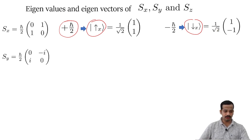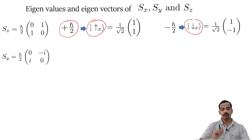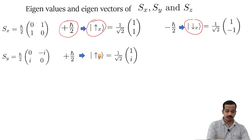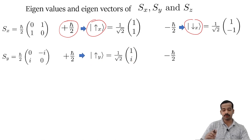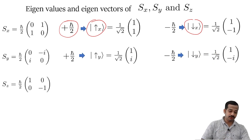The S-y matrix is (h-bar by 2) times [[0, minus i],[i, 0]]. Its eigenvalues are also plus h-bar by 2 and minus h-bar by 2. Corresponding to plus h-bar by 2, the eigenstate spin-up-y equals (1 by root 2)[1, i]. Corresponding to minus h-bar by 2, the normalized eigenstate spin-down-y equals (1 by root 2)[1, minus i].